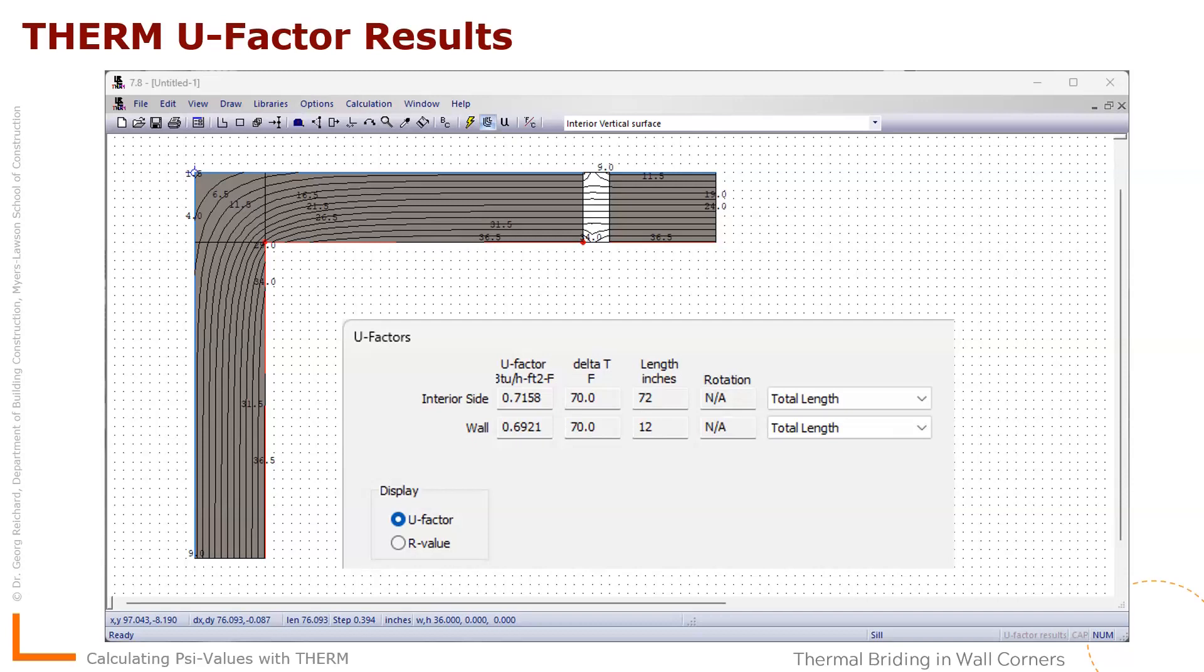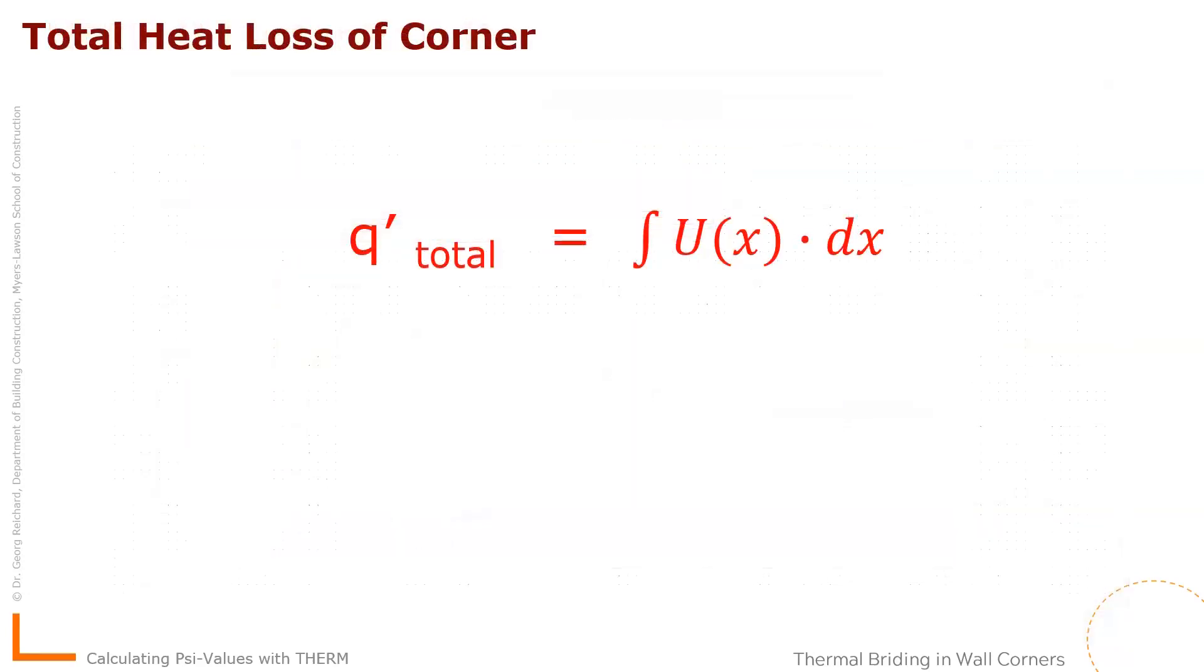So what we want to know is what's the total heat loss across the corner. And we can write this as the integration of the U value of the conductance at a certain point along our surface over the length of those surface. Now, Therm produced that result as average of this function. And we can write this as a U value, the average U value that Therm spits out over the length because we walk along the X axis. The X coordinate is along the edge that we walk. So that's what we call the total length that we use there.